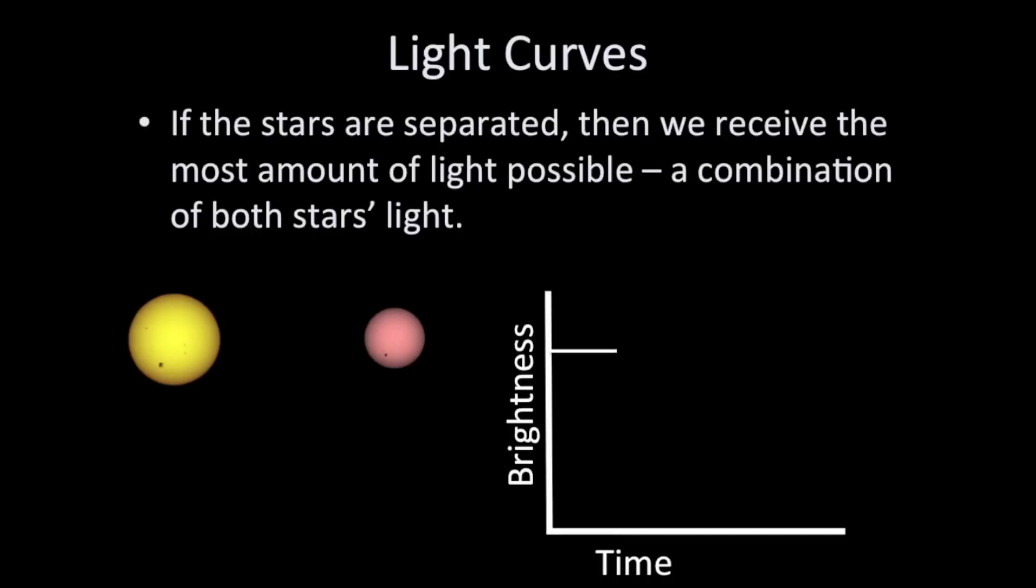So now let's talk about light curves. If the two stars are separated, then from Earth, as we view the system on its side, we'll get light from both stars. The total amount of light will be indicated by the brightness on this brightness versus time curve. Here, I have a horizontal line showing the total amount of brightness. Nothing is changing because nothing is being blocked at the moment.